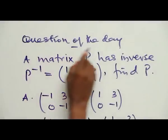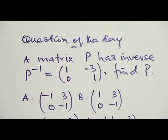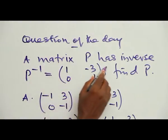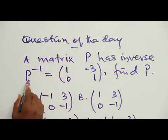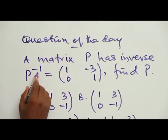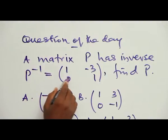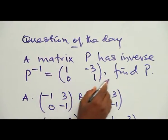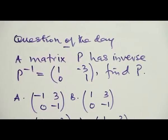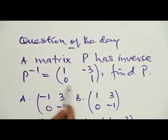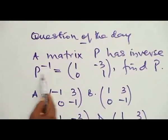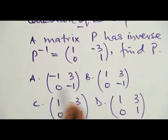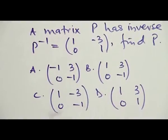Here is a question of the day. A matrix P has eigenvalues. P equals 1, -3, 0, 1. So this is the eigenvalues of the matrix P. The options are A, B, C, D. I'll present it to you here.